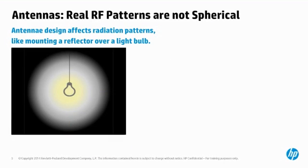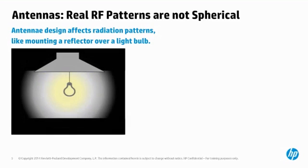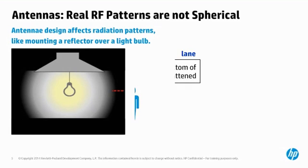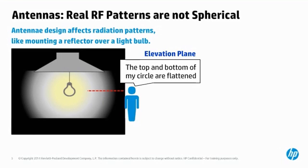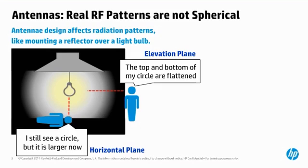Imagine the same room as before, but this time a table is added to the bottom of the room, and a reflective hood has been positioned atop the light source. Some of the light energy that used to continue upward is now reflected back down. Since more energy is now reflected downward, the circumference of the circle gets bigger. Imagine placing your hands on the top and bottom of a balloon — if you squish the top and bottom inward, the sides bulge out. This closely mimics many antennas that humans create. The standing man sees a flat spot on the top and bottom of the light pattern, while the horizontal man still sees a circle, but that circle is now larger than before.